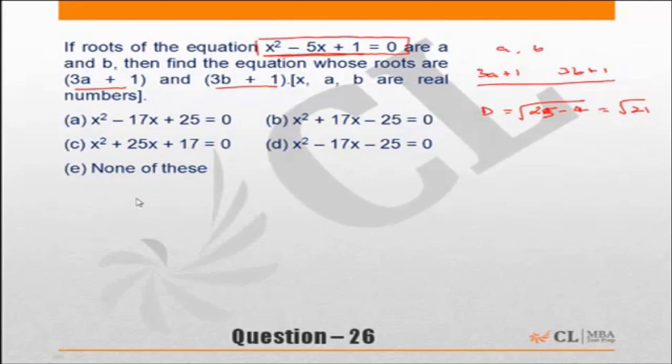The roots of the new equation have to be 3a plus 1 and 3b plus 1. So the sum of the roots of the new equation has to be 3a plus 3b plus 2 which is nothing but 3 into a plus b plus 2. But what is a plus b? If you look at the original equation, the sum of roots would have been a plus b which is minus b upon a, which is minus of minus 5 by 1, which is equal to 5. So a plus b is 5.